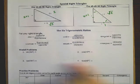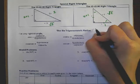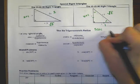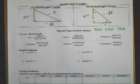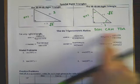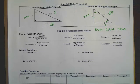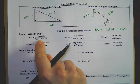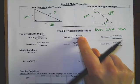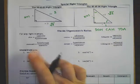First, let's review all of our trig ratios using these triangles. Hopefully you've heard the phrase SOHCAHTOA — it's a tool to help you remember the top three trig ratios. Sine of an angle is opposite over hypotenuse, cosine is adjacent over hypotenuse, and tangent is opposite over adjacent.